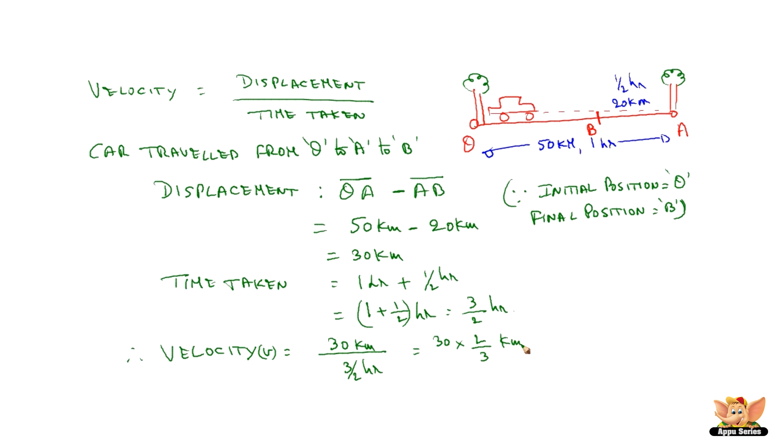Therefore the velocity can be computed as displacement 30 km by 3 by 2 hour which is 30 into 2 by 3 km per hour. So 3 tenths which is 20 km per hour. Therefore velocity is 20 km per hour for this car during this journey.